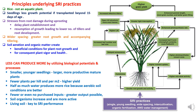The principles underlying SRI include: first, rice is not an aquatic plant — in the traditional method rice is grown in stagnated water, but rice does not have the nature of aquatic plants. Rice seedlings lose much of their growth potential when transplanted beyond 15 days of age. Stresses from root damage during uprooting delay plant establishment and rejuvenation of growth, leading to lower numbers of tillers and reduced root development. Wider spacing leads to better root growth and accompanying tillering.